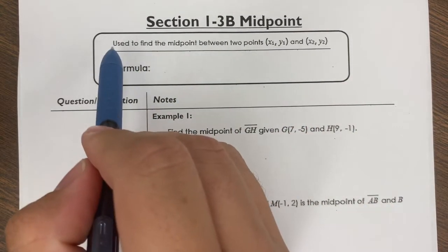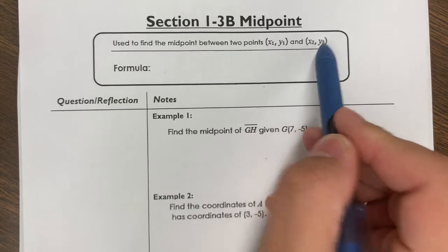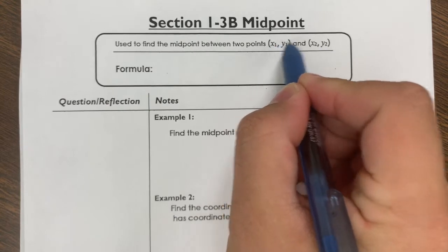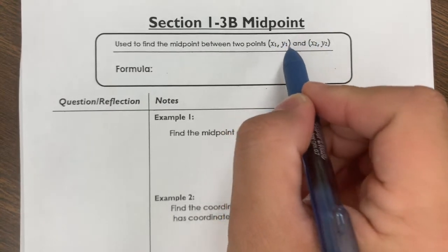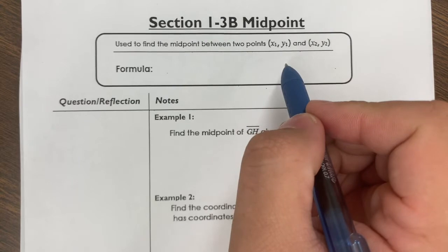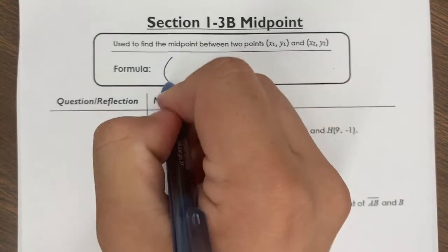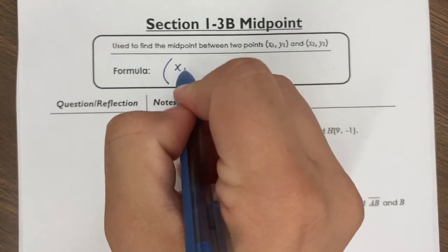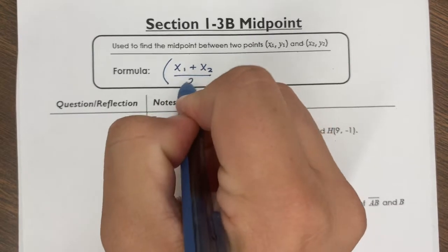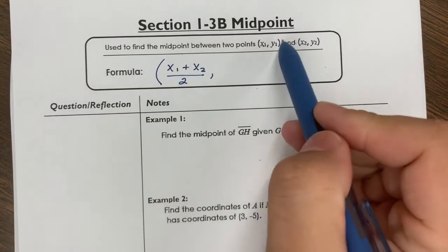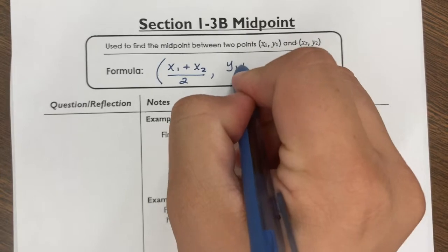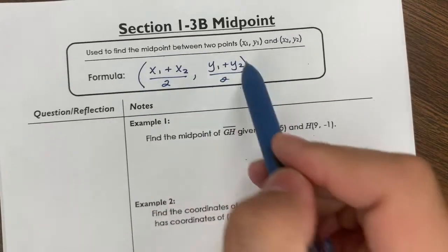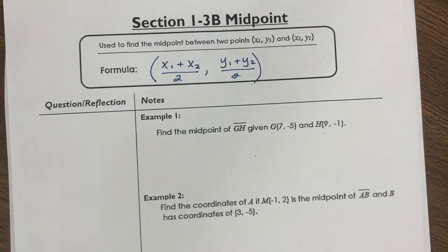So if you're given these two points, x1, y1, and x2, y2, it's a really simple formula. Essentially, what you got to do is you got to take the average of the two x values, and then also take the average of the two y values, and then your final answer is going to be another coordinate. So this is the formula: x1 plus x2 divided by 2, and y1 plus y2 divided by 2. And then whatever result you get from working all of that out is going to be your final answer.